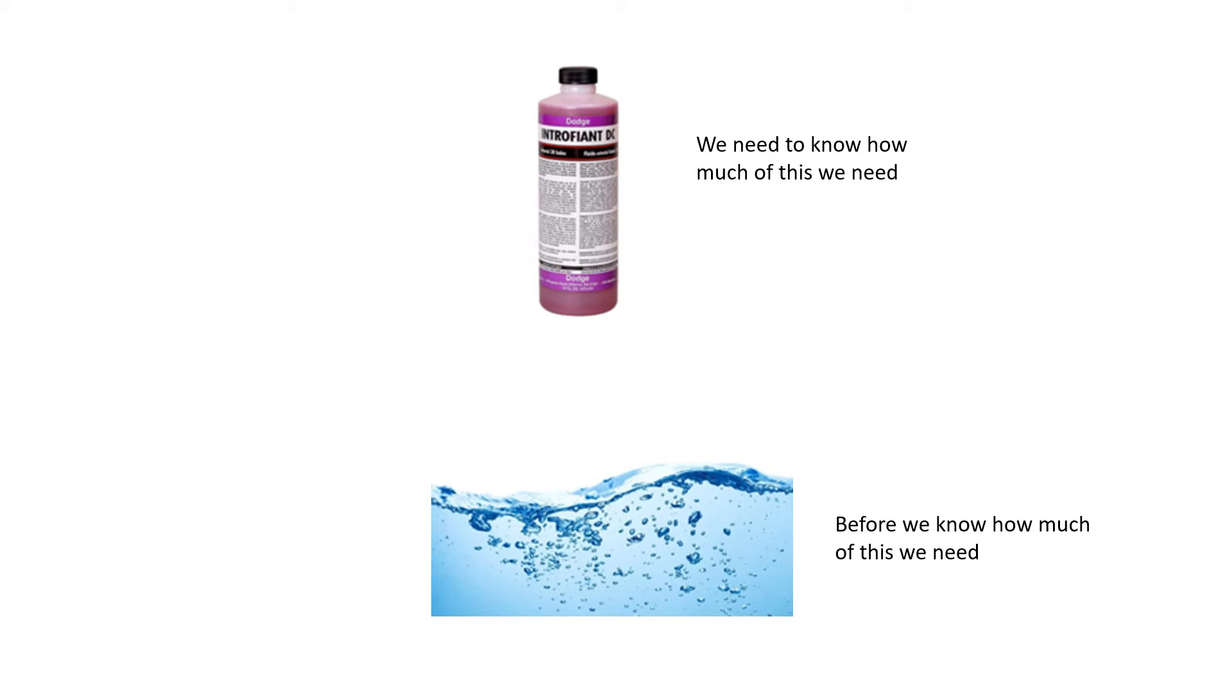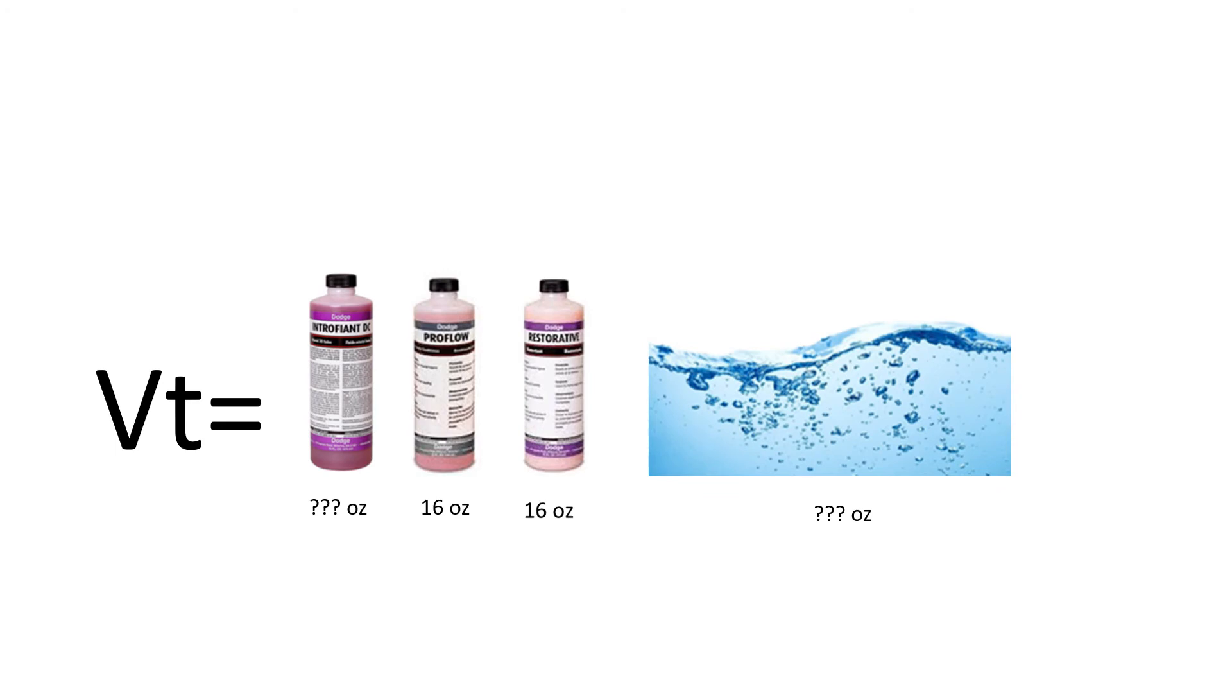So we are going to set our total volume at 256 ounces. But even still, before we know the amount of water that we are going to need, we also need to figure out how much Intrafiant we are going to use. We need to figure out the VB of Intrafiant before we can do this, because total volume is made up of our arterial fluid like Intrafiant, our supplemental chemicals ProFlow and Restorative at 16 ounces each, and then the rest will be made up of water.